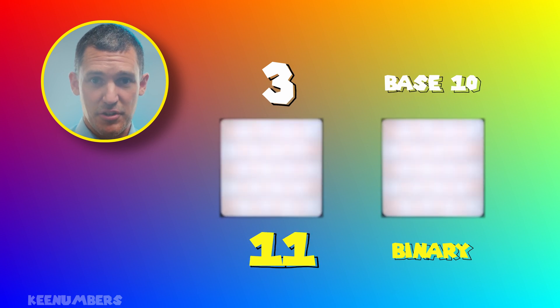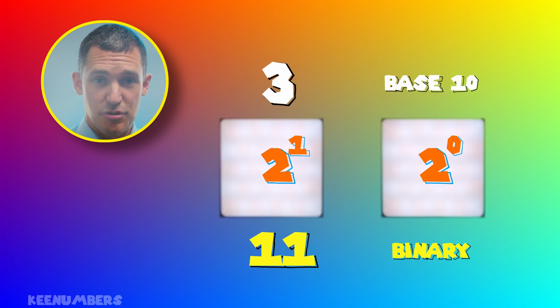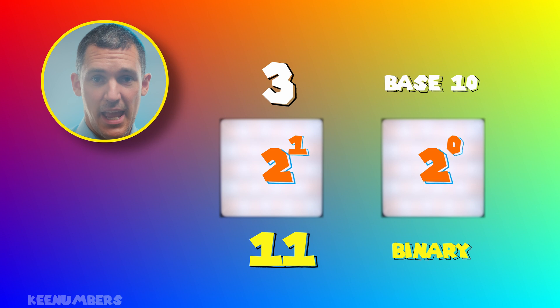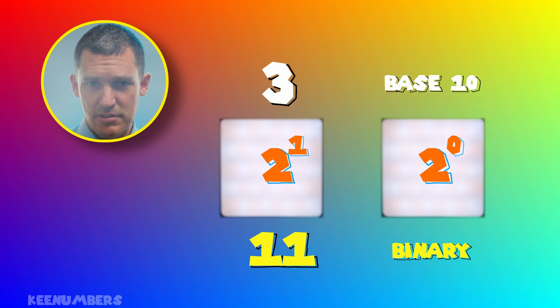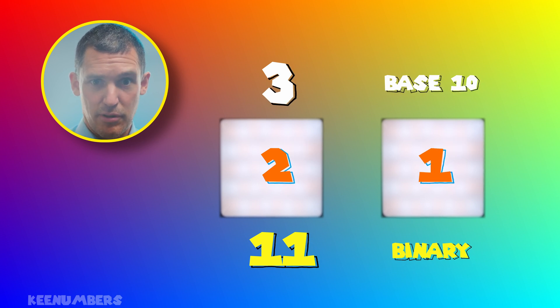So if you're saying both lights are on, you're using 2 to the 1 and 2 to the 0. In other words, 2 plus 1, or 3.